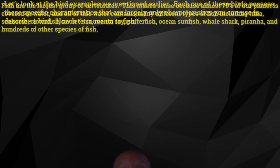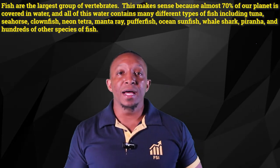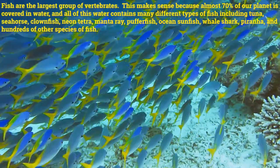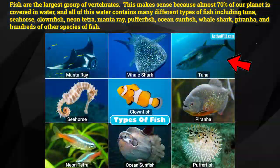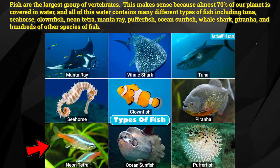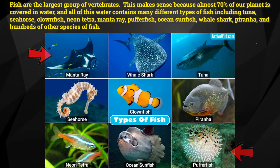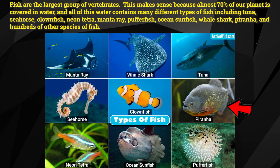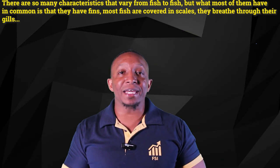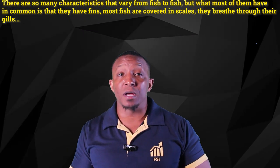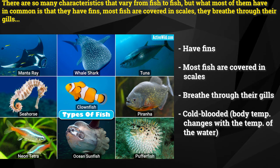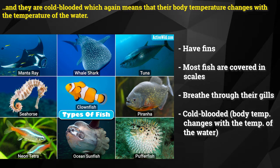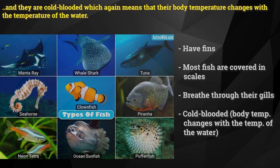Now let's move on to fish. Fish are the largest group of vertebrates. This makes sense because almost 70% of our planet is covered in water, and all of this water contains many different types of fish including tuna, seahorse, clownfish, neon tetra, manta ray, pufferfish, ocean sunfish, whale sharks, piranha, and hundreds of other species. There are many characteristics that vary from fish to fish, but what most of them have in common is that they have fins. Most fish are covered in scales, they breathe through their gills, and they are cold-blooded, which means their body temperature changes with the temperature of the water.